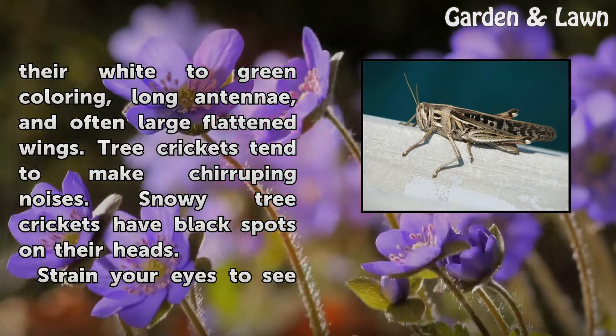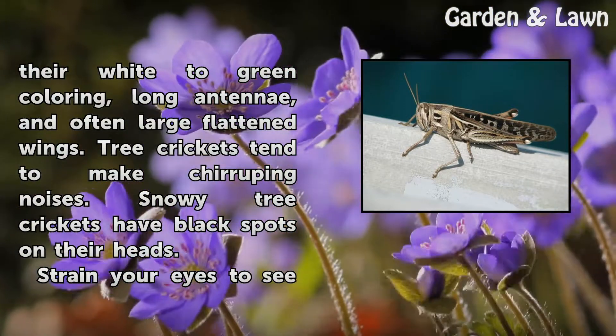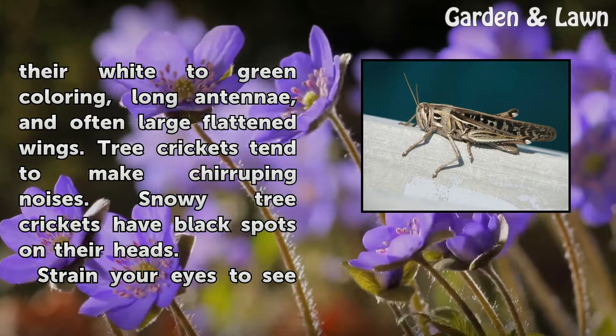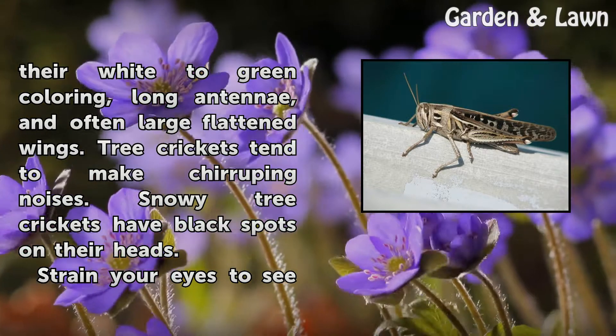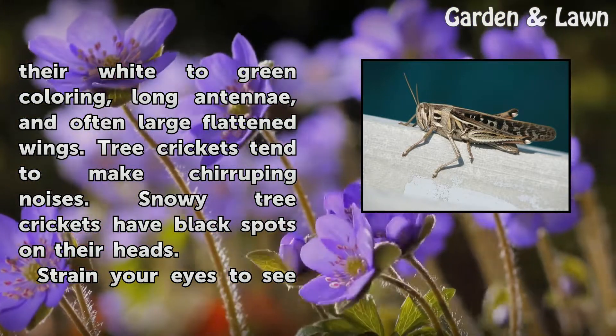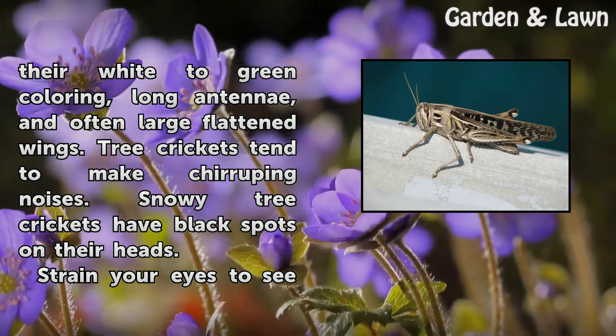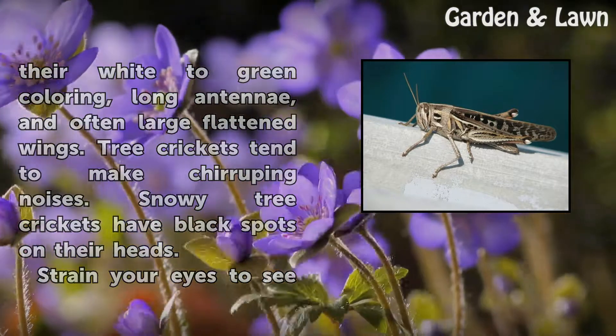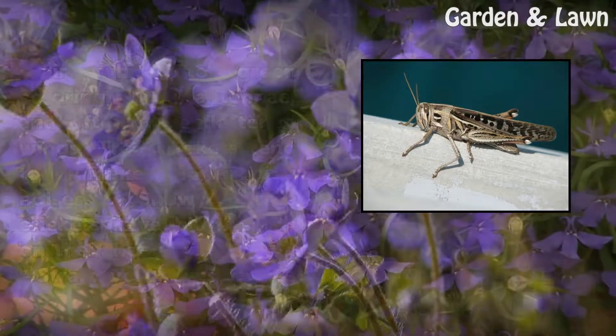Identify tree crickets by their white to green coloring, long antennae, and often large flattened wings. Tree crickets tend to make chirruping noises. Snowy tree crickets have black spots on their heads.